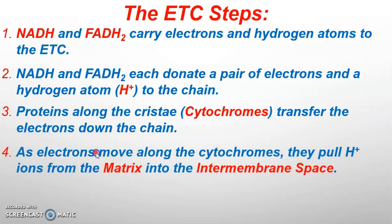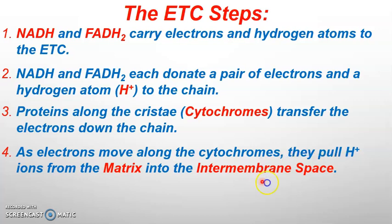As the electrons from NADH and FADH2 move down the electron transport chain, the cytochromes pass them on one after the other. As the electrons move along the cytochromes, they pull hydrogen ions from the matrix — the very center of the mitochondria — the same hydrogen ions just released when we oxidized NADH and FADH2. The electrons pull them up into the intermembrane space, creating a large hydrogen ion gradient, like putting water behind a dam.